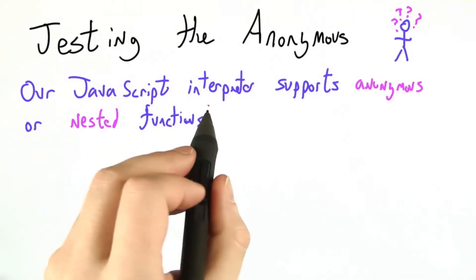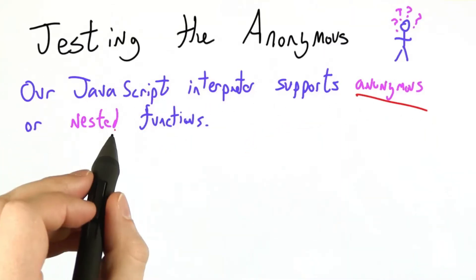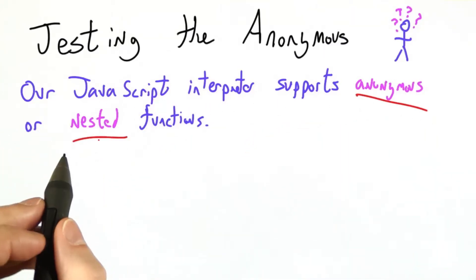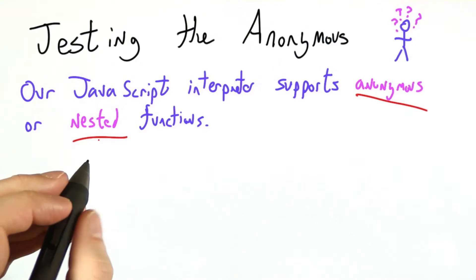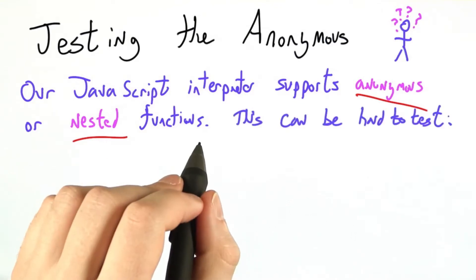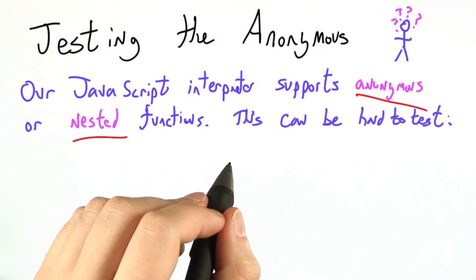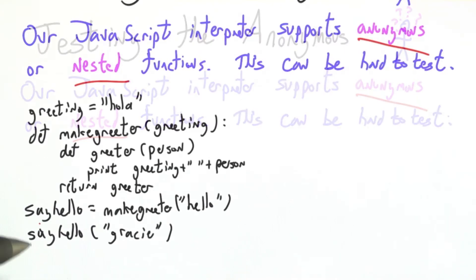One of the cool features of our JavaScript interpreter is that it supports anonymous or nested functions. However, these features can be very hard to test, so let's try it out together.